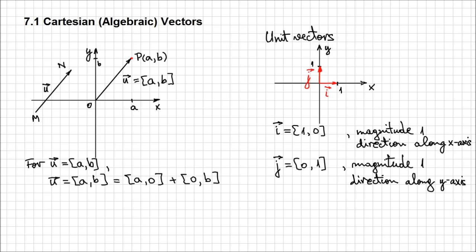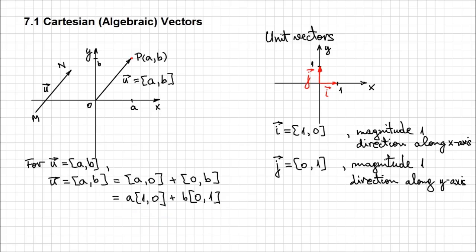Another form I can write this vector is by factoring these values, because a and b can be any number. So I can write it as a times [1, 0] plus b times [0, 1]. I factor out the scalars a and b. Now, since we already know what unit vectors are, you recognize that [1, 0] is the unit vector on the x-axis and [0, 1] is the unit vector on the y-axis. So we can describe it using unit vectors in the format: a·i + b·j. And this is another form for describing algebraic vectors.